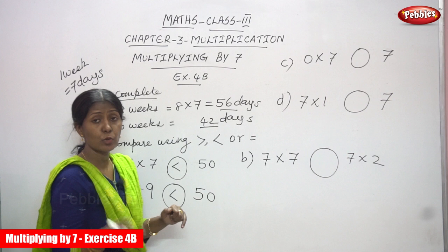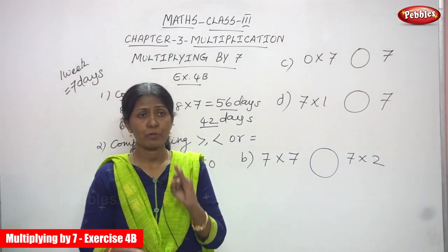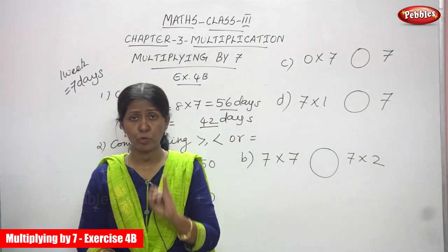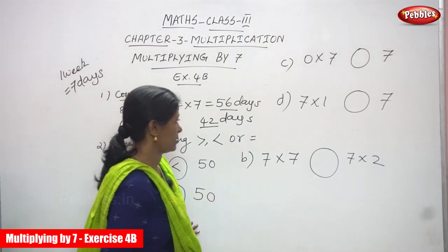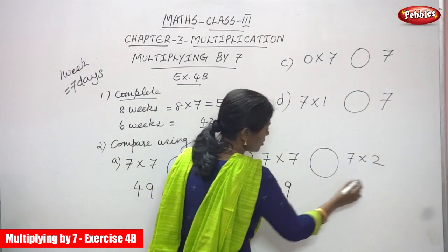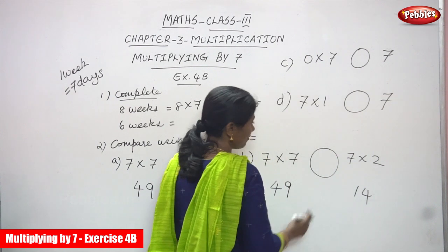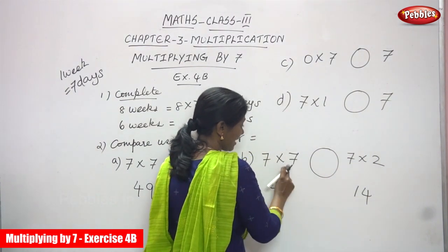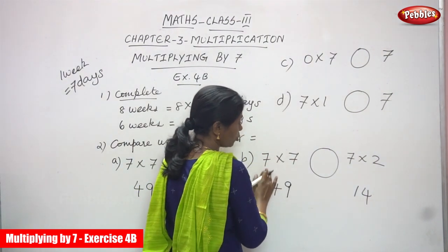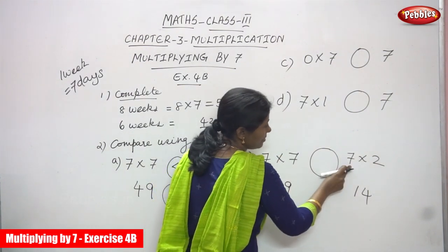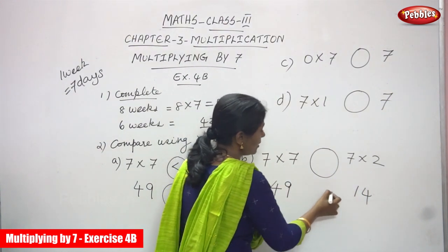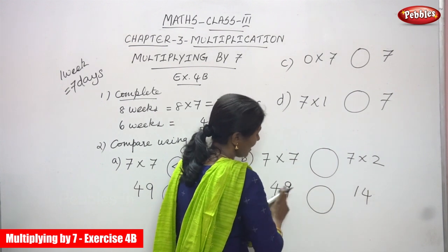So 7 sevens are 49 — how do you know this? You have to say the table: 7 ones are 7, 7 twos are 14, 7 threes are 21, 7 fours are 28, 7 fives are 35, 7 sixes are 42, and 7 sevens are 49. Next: again 7 sevens are 49, and 7 twos are 14. Here 7 sevens are 49 — you must draw the circle for which is greater or lesser.